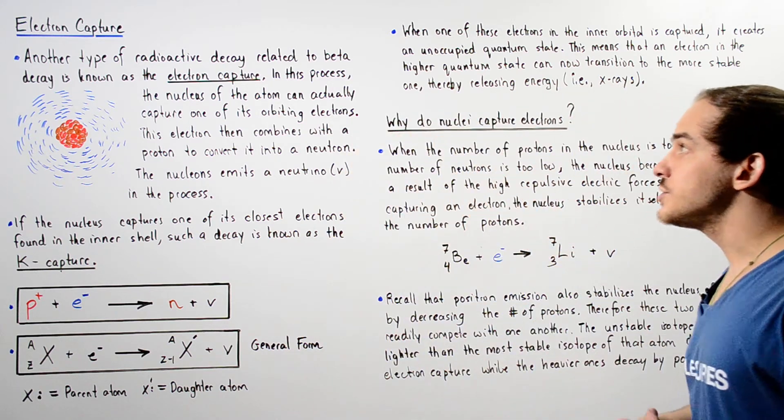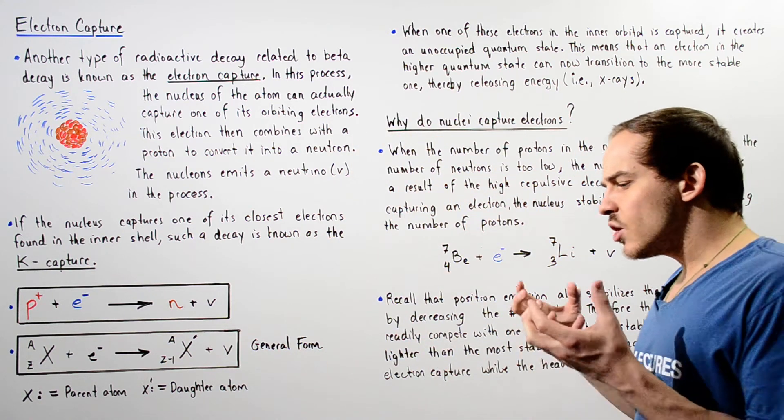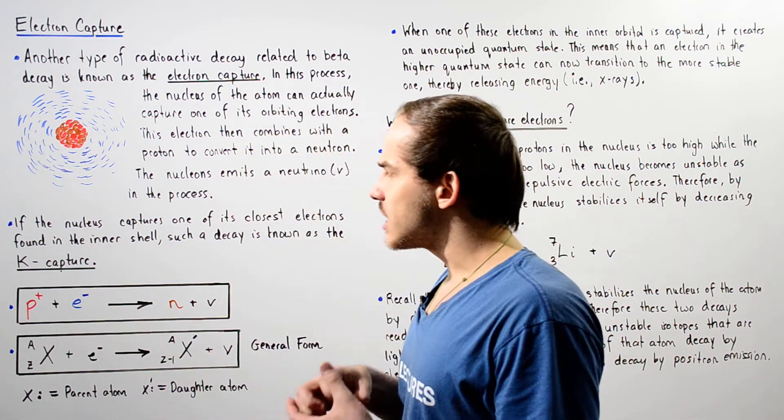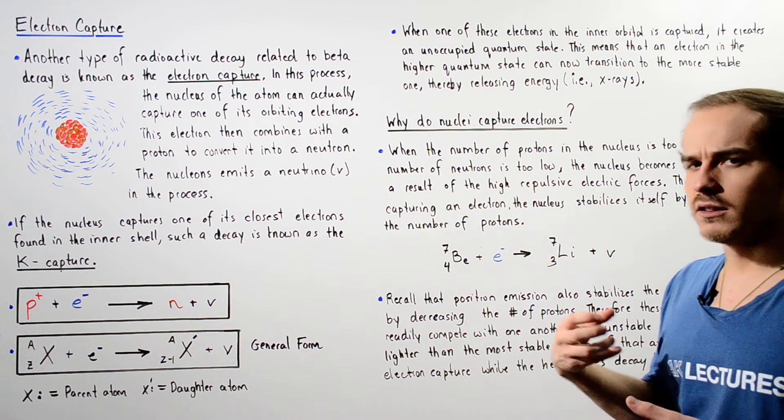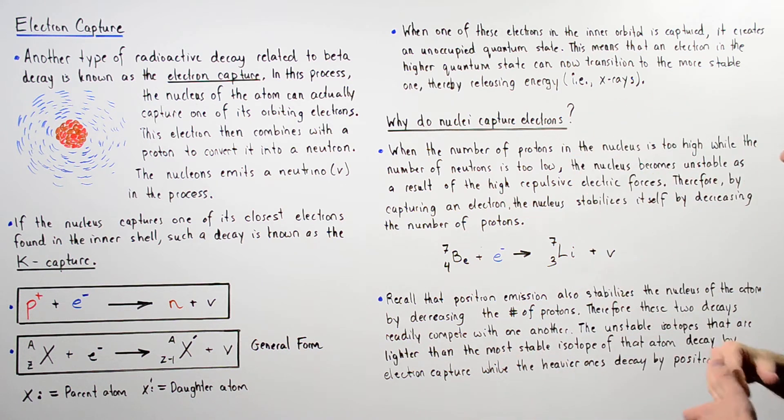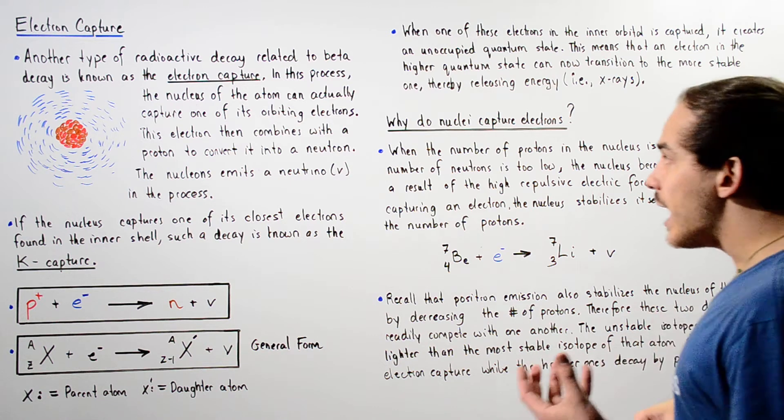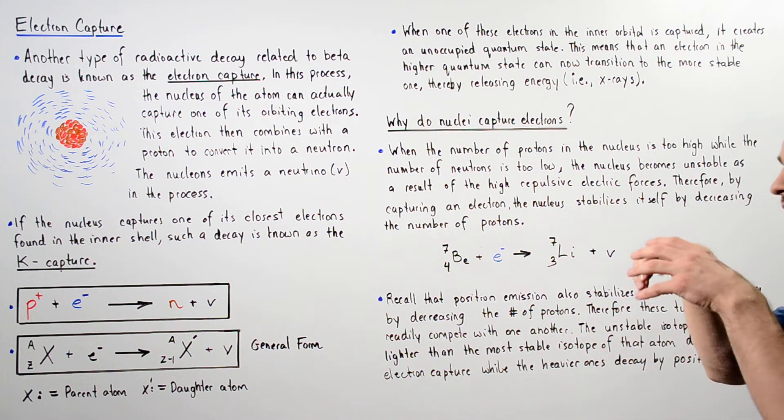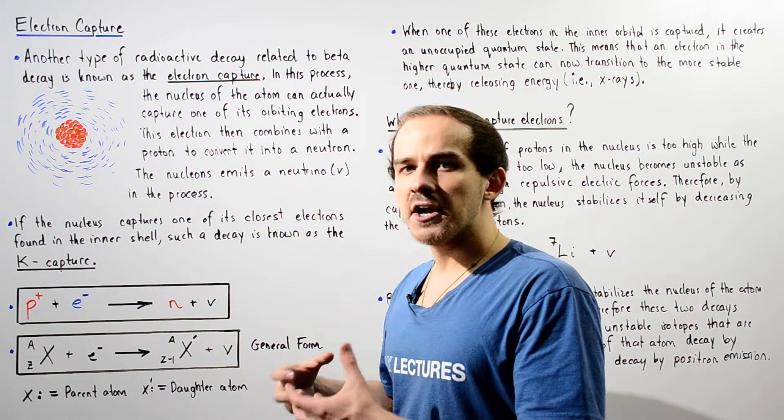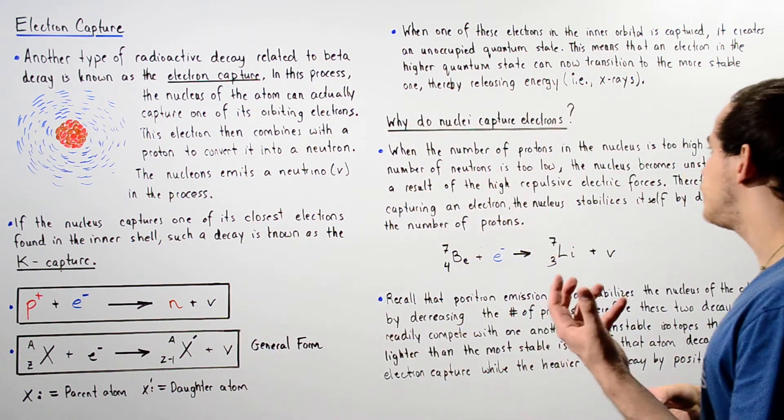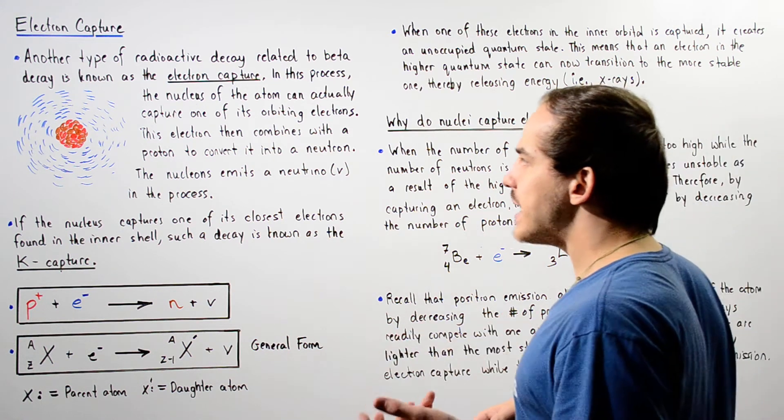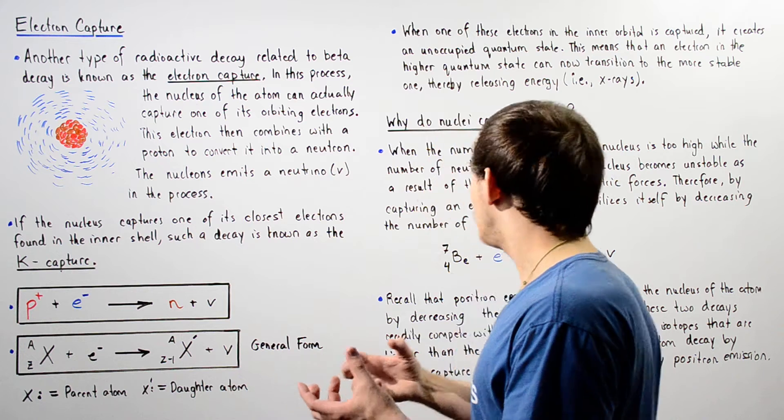Now the question still remains, why in the world would it be beneficial for our nucleus of the atom to actually capture one of its electrons? Well, when the number of protons in the nucleus is too high while the number of neutrons is too low, we know that that type of nucleus contains very high electric repulsive forces as a result of those protons. And that basically creates an unstable system.